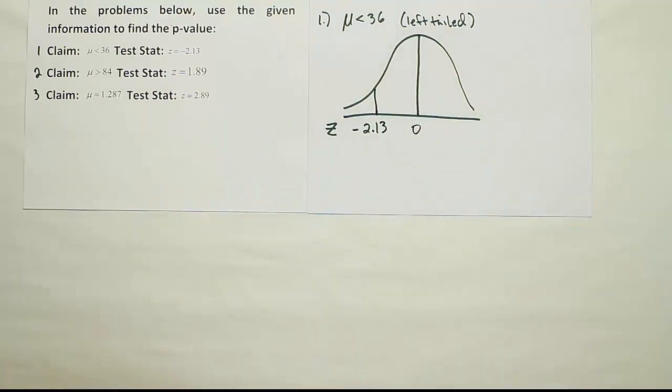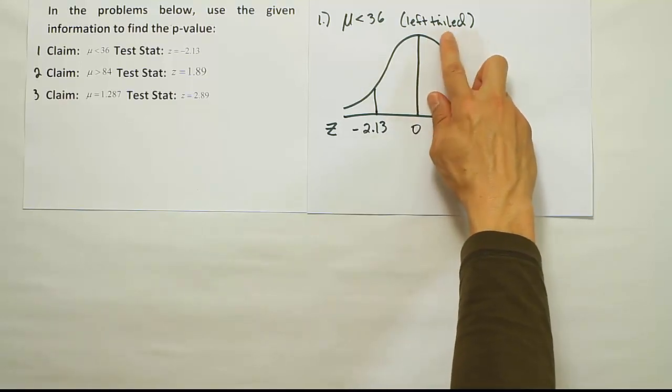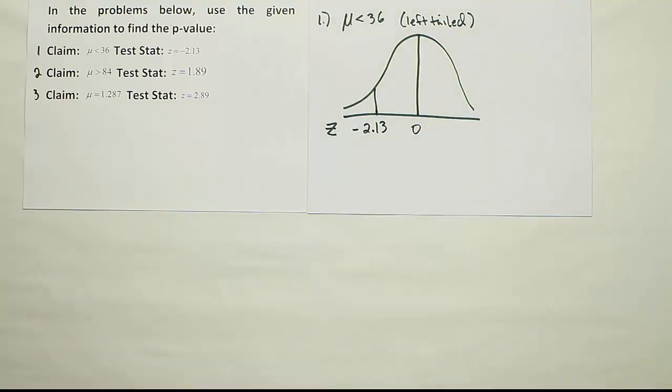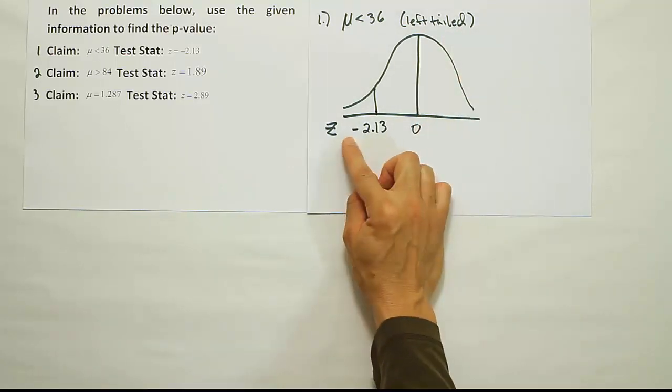The reason we wanted to know whether it was a left-tailed test, a right-tailed test, or a two-tailed test is that determines how we find our p-value. The rule is pretty simple to remember: if it's a left-tailed test, you find the area to the left of the test statistic.